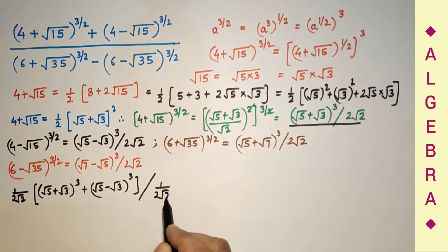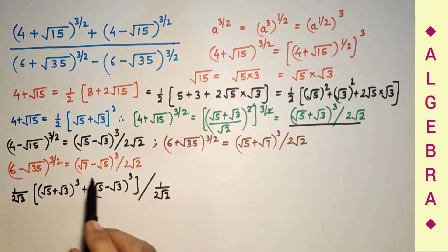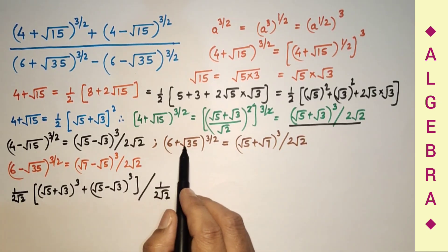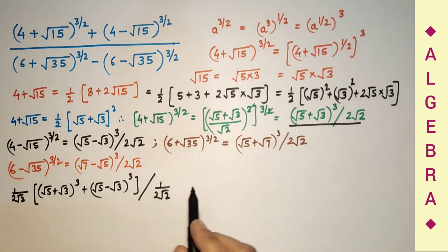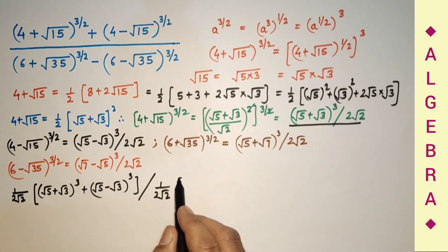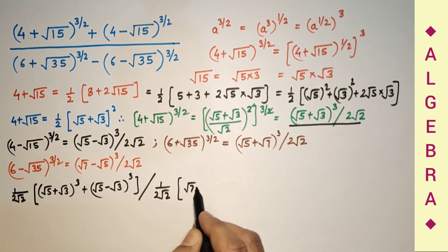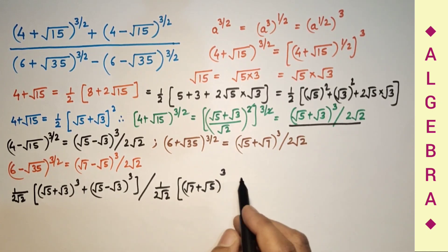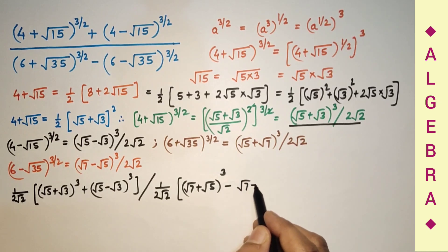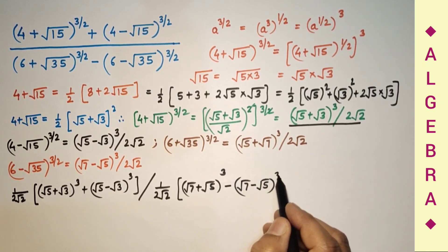After the 2 root 2 factors cancel, the denominator of the overall expression becomes (root 7 plus root 5)³ minus (root 7 minus root 5)³.